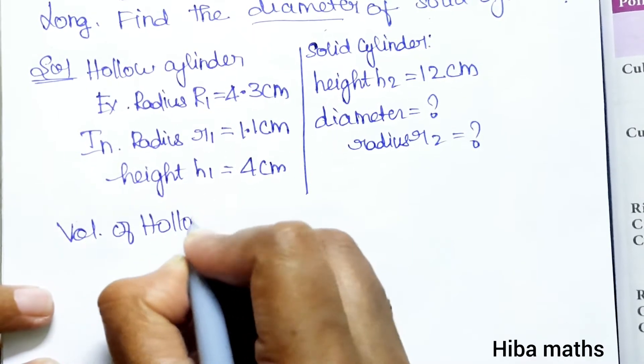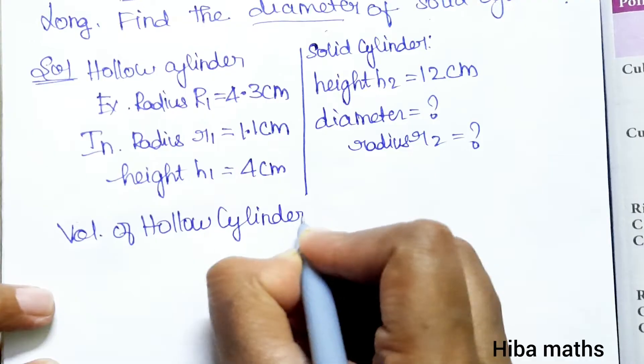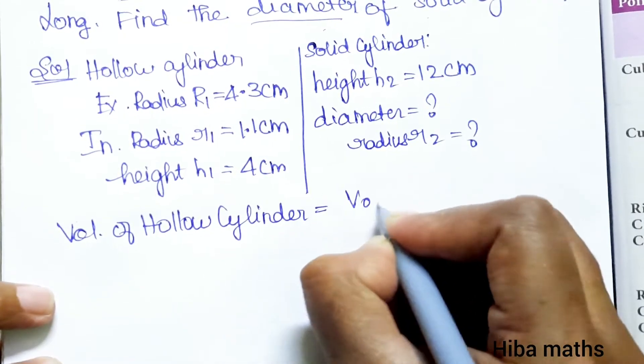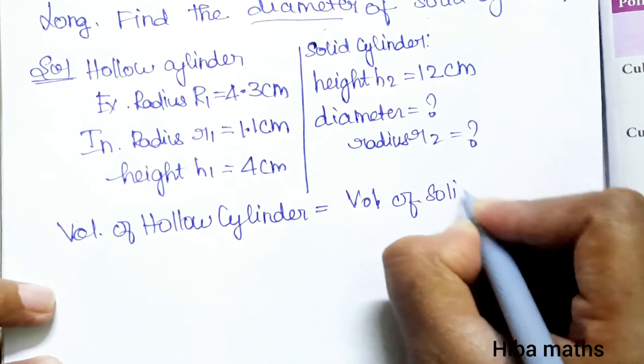Volume of hollow cylinder is equal to volume of solid cylinder.